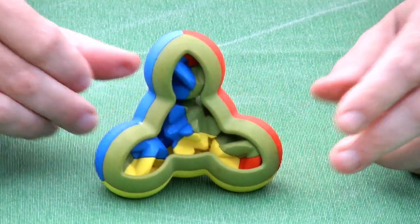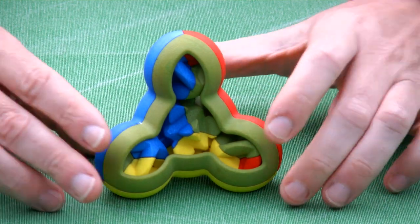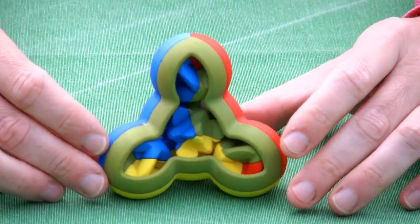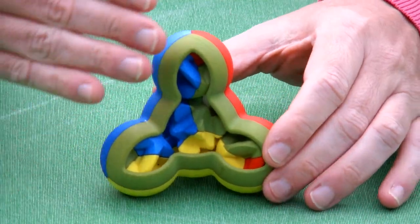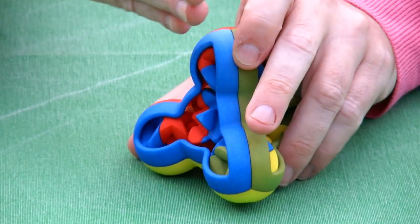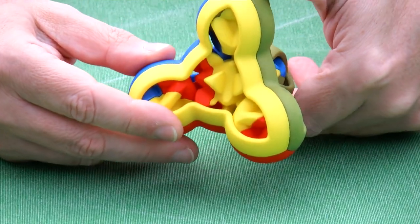Very quickly the puzzle is getting scrambled. The object of course is to get it back so that this face is fully green, this is blue, this is red, and this is yellow.